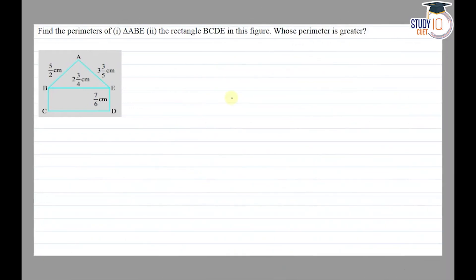Hello everyone, this question appears in class 7th NCERT chapter of fractions and decimals. This is the fifth question of exercise 2.1. The question says to find the perimeter of triangle ABE and the rectangle BCDE, and determine whose perimeter is greater.